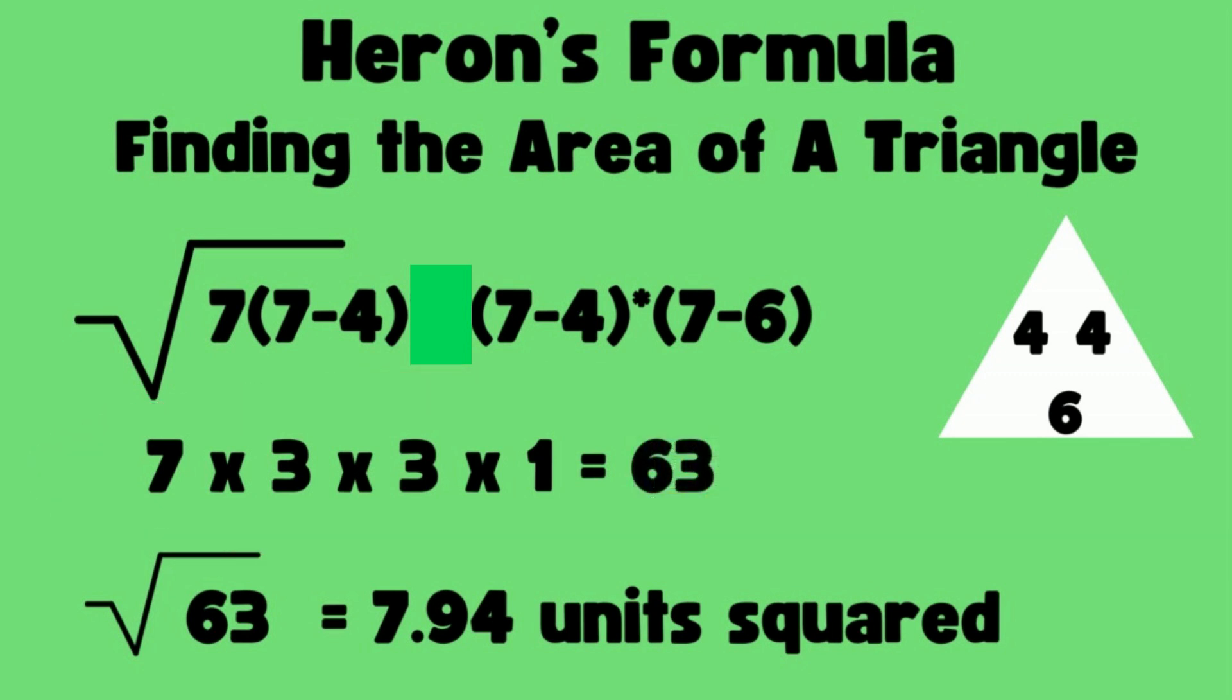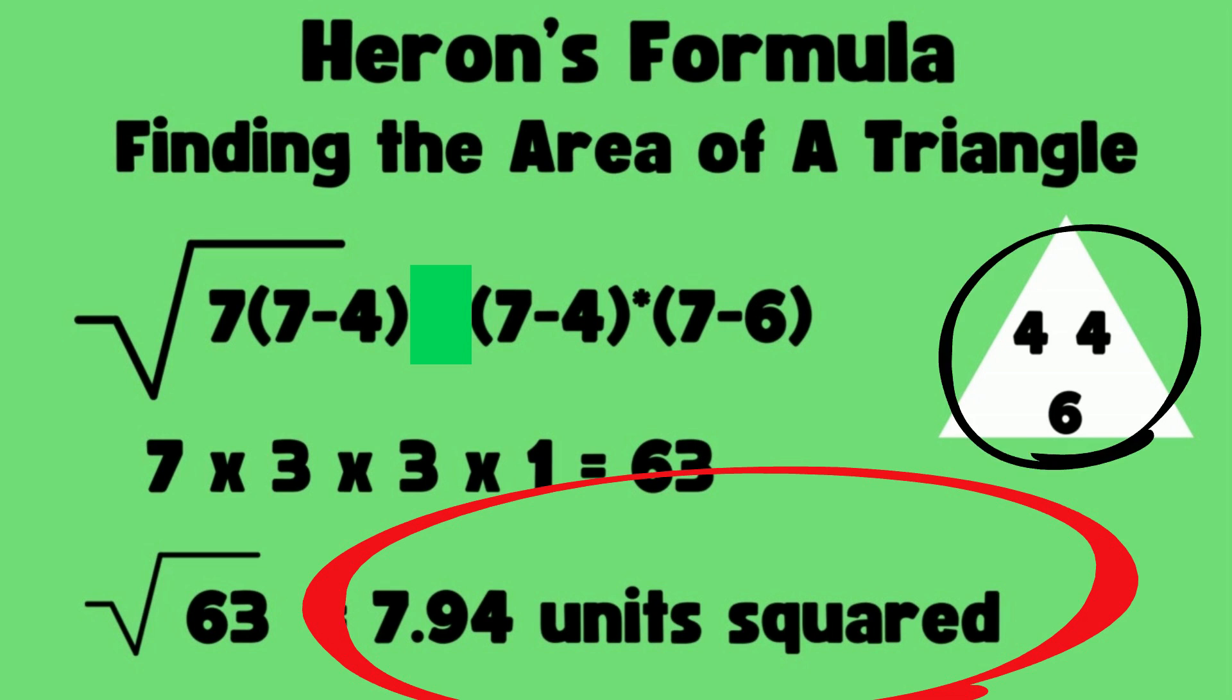So it's the square root of 63. We know the square root of 64 is 8, so it's very close to 8. Let's take the square root of 63, and that gives me 7.94. So 7.94 units squared is the area of that triangle using Heron's formula.